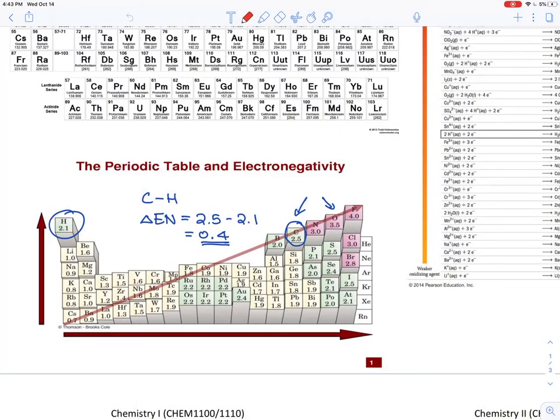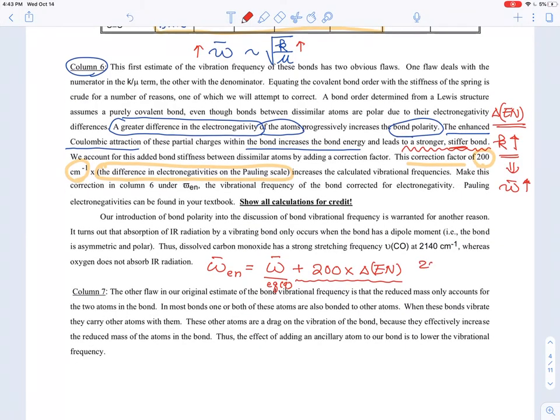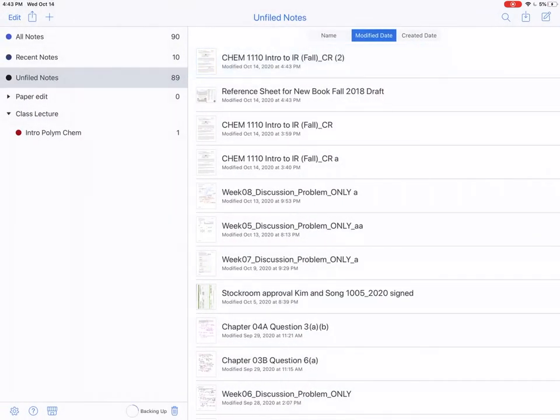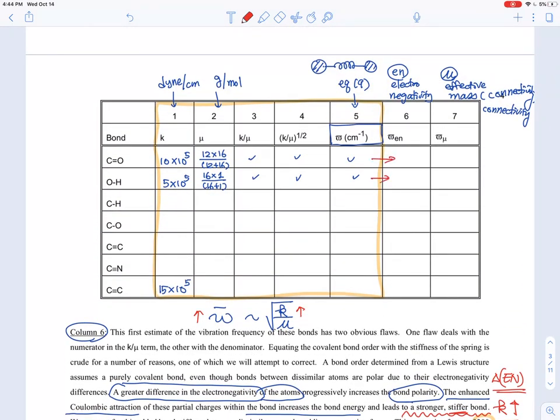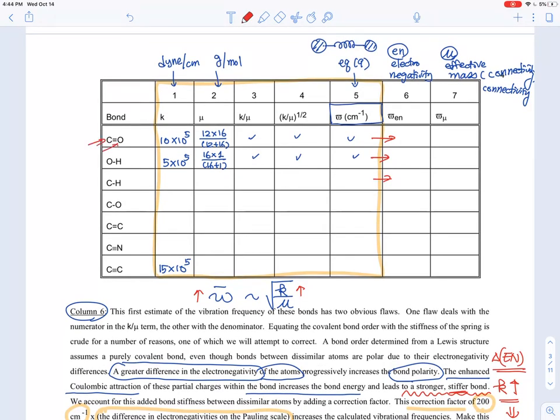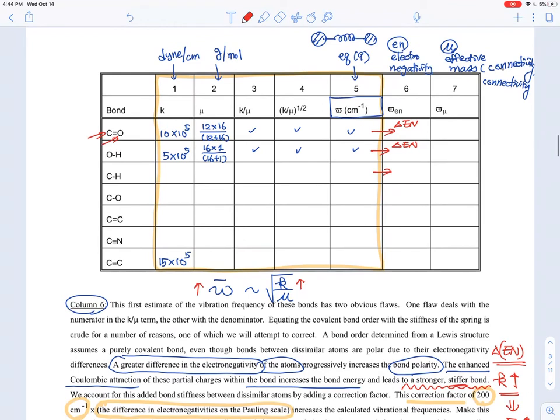Where do we find these EN values? If you go back to the reference sheet, for example, for C-H, carbon has 2.5 electronegativity and H is 2.1, so the delta EN difference is 0.4. You can use that as the number here, so that's 200 times 0.4, and that's the correction for C-H as an example. You can make the correction for each quantity by looking at the electronegativity differences. Delta EN has to be calculated for each pair of atoms.